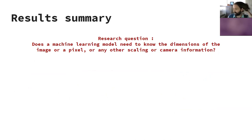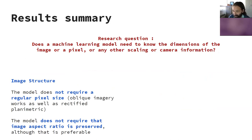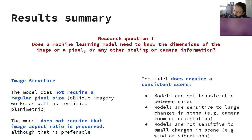Does a machine learning model need to know the spatial scaling? It does not require a regular pixel size — the oblique imagery works just as well as the rectified imagery. We also found that keeping the aspect ratio of the imagery constant was preferable but not critical. However, the model does require a consistent scene. When trained, one model did not predict another site very well — therefore the models were not transferable between sites, dictated by the data they were trained on. The models are sensitive to very large changes in the scene such as changing the zoom or orientation, but not sensitive to small changes such as vibration from a road or wind.